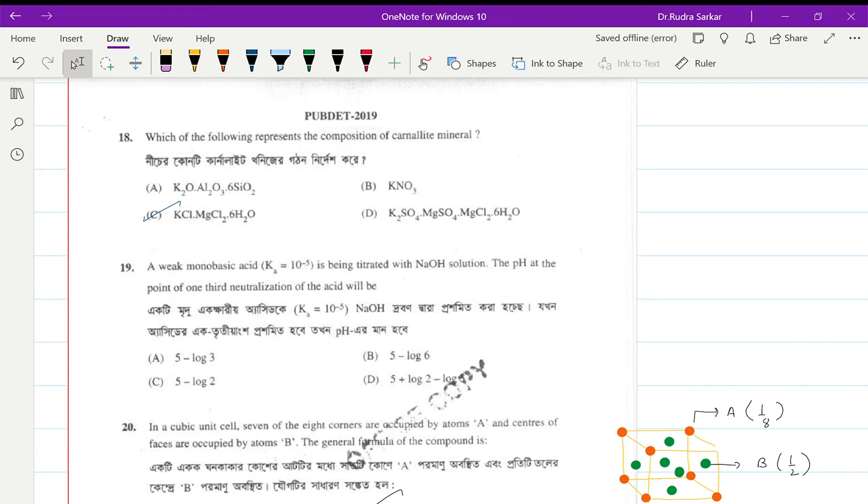Question number 90 says a weak monobasic acid with Ka = 10^-5 is being treated with NaOH. The pH at the point of one-third neutralization of the acid, that means already...